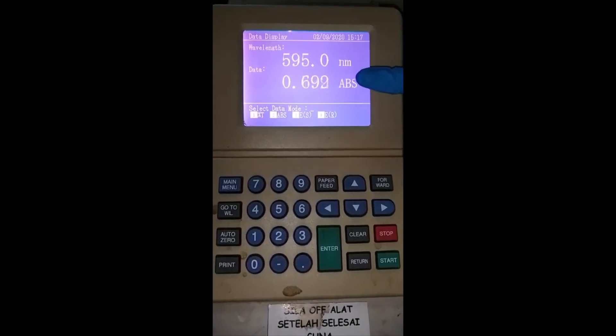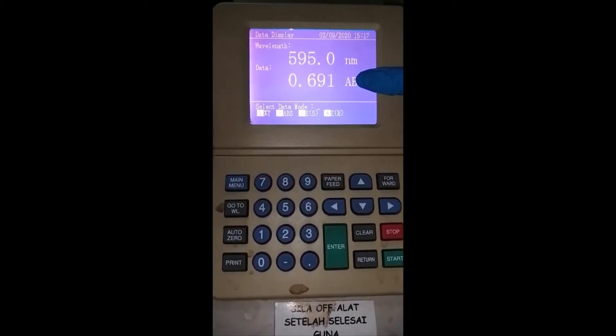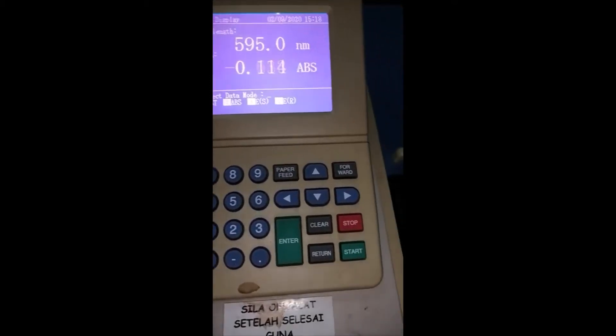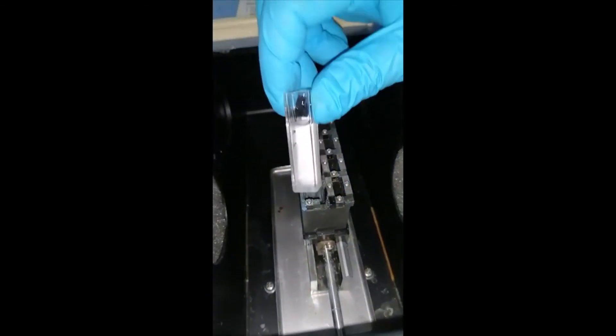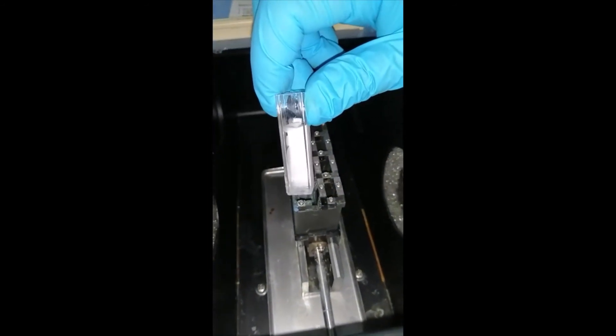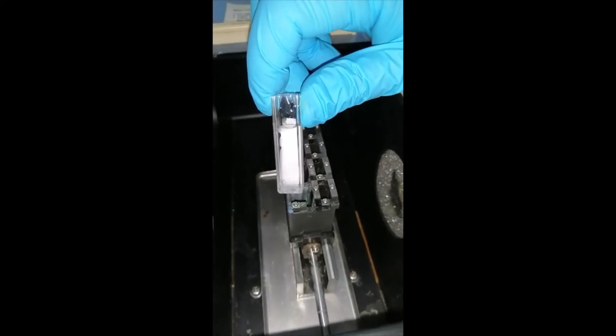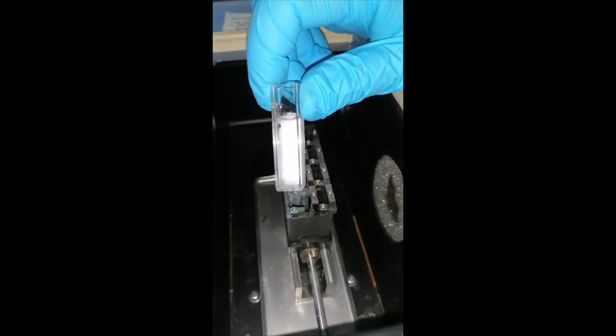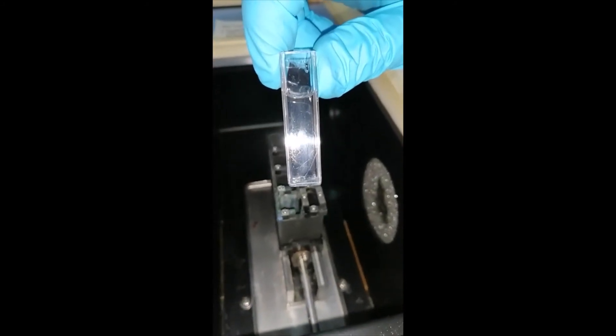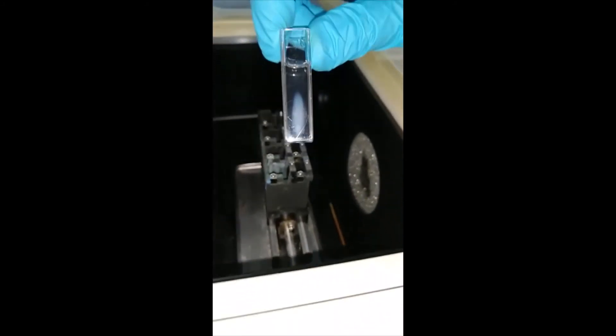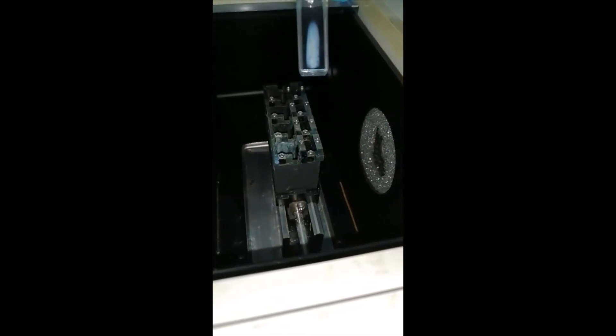Jika bacaan tidak stabil, lihat semula kuvet anda. Pastikan permukaan kuvet dilap dengan bersih, tiada gelembung udara, sample tidak berada dalam keadaan sejuk. Pelantar kuvet berada dalam keadaan yang betul.